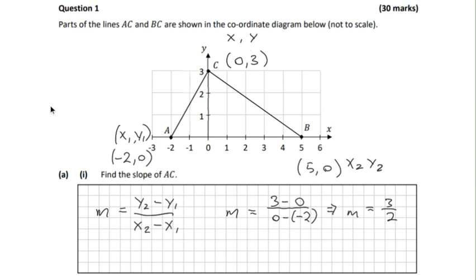We can say this one now is x1, y1 and this one is x2, y2. So slope of BC, that's AC and now BC. M equals y2, 0 minus 3 over x2 minus x1, which will be 5 minus 0, and our result is minus 3 over 5. So it has a negative slope.